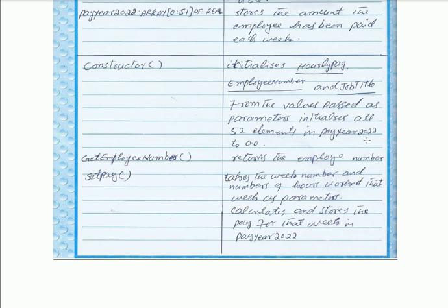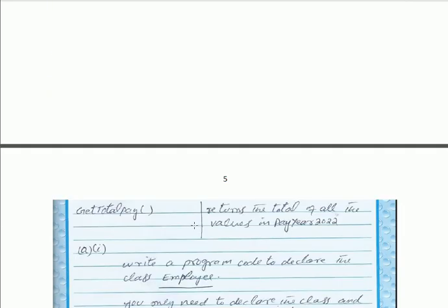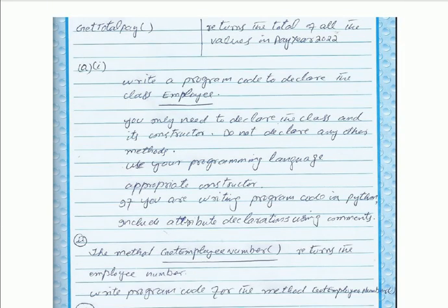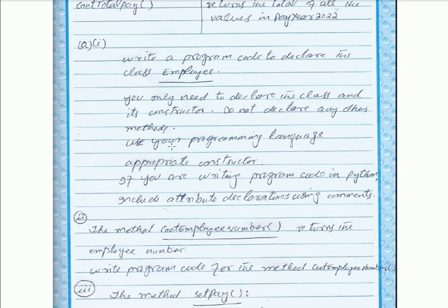The method get_employee_number returns the employee number. The method set_pay takes the week number and number of hours worked that week as parameters, calculates, and stores the pay for that week in pay_year_2022. The method get_total_pay returns the total of all the values in pay_year_2022.